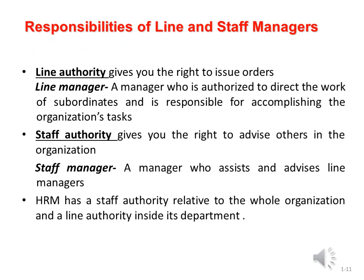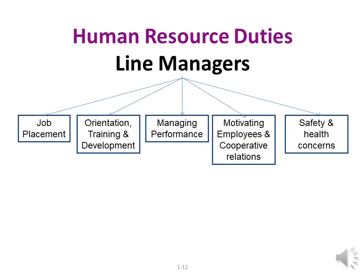According to this categorization, we have two types of authorities in the organization: line authority and staff authority. Line authority is the authority to direct the work of others and be responsible for achieving organizational results. Managers with staff authority help and advise the line managers in performing their main duties. The responsibility for achieving human resource management functions is shared between the line managers and the HRM department.